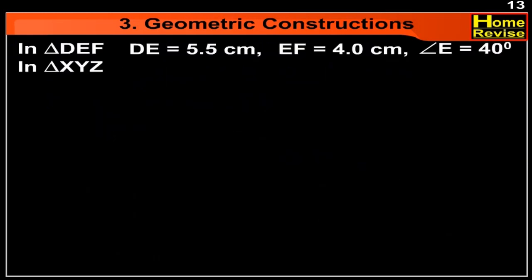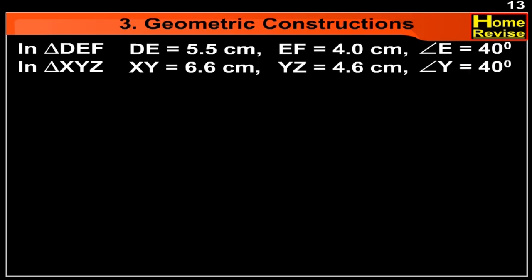In triangle XYZ, XY is equal to 6.6 cm, YZ is equal to 4.6 cm, and angle Y is equal to 40 degrees. So let us construct triangle XYZ.